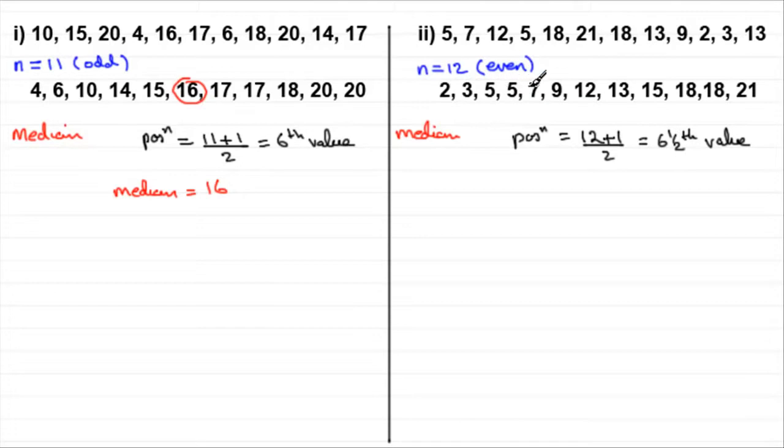And where is that 6 and a half value? It's in between the 6th and 7th values in the list. So it's in between these two values, the 9 and the 12. So when this happens, what we've got to do is work out what the mean is of these two numbers. You take those two values and divide them by 2. If you do 9 plus 12 over 2, you're going to get 10.5. So that's our median. This will always happen when you've got an even number of values in a list.